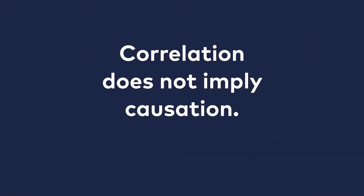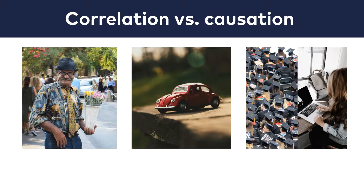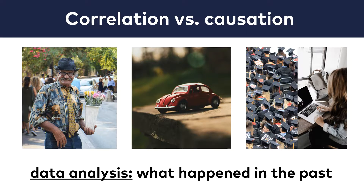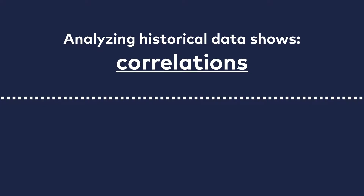Correlation does not imply causation, and that's a problem for us because in research, very often the real treasure lies in knowing more about causation. What's common between the three examples I showed you? All of them analyzed historical data — they examined what happened in the past. But analyzing historical data, by definition, is able to reveal correlations only. How do you discover causation then?